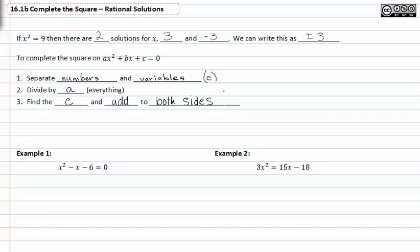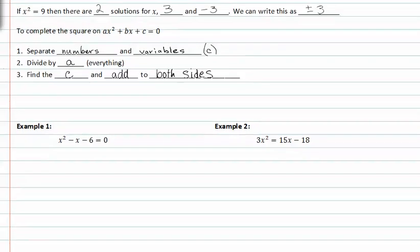I think this will make more sense once we try example one. In example one, we first need to separate the numbers and variables. We do this by adding six to both sides. When we add six to both sides, we get x squared minus x is equal to six. Notice I'm leaving a placeholder right here. This will become important in just a minute.